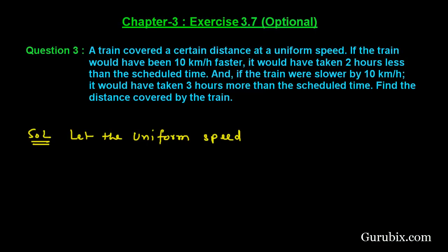Welcome friends. Let us solve question number 3 of exercise 3.7 of chapter 3. The question says: a train covered a certain distance at a uniform speed. If the train would have been 10 km per hour faster, it would have taken 2 hours less than the scheduled time. And if the train was slower by 10 km per hour, it would have taken 3 hours more than the scheduled time. Find the distance covered by the train.